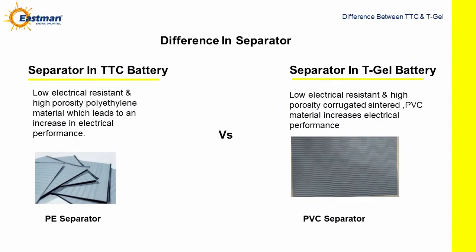Difference in separator. Separator in TTC battery is low electrical resistant and high porosity polyethylene material, which leads to an increase in electrical performance. While, separator in T-Gel battery is low electrical resistant and high porosity corrugated sintered PVC material, which also increases electrical performance.